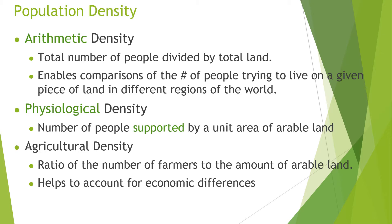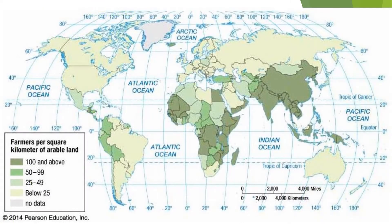Agricultural density is the number of farmers divided by arable land, and this helps to account for economic differences. You can look at agricultural density and really determine whether it's a developed or less developed country, because less developed countries are going to have much higher agricultural densities — a lot of farmers — whereas more developed countries like the US have very, very low agricultural densities.